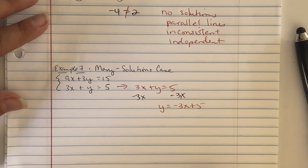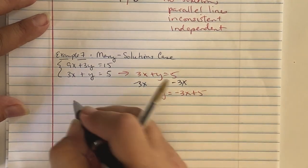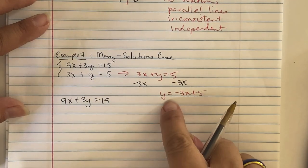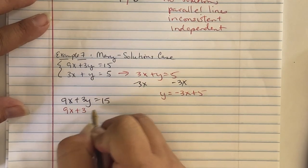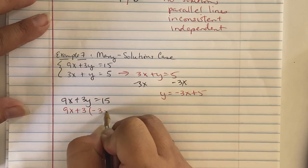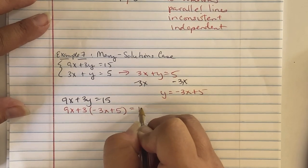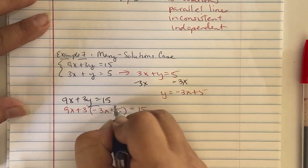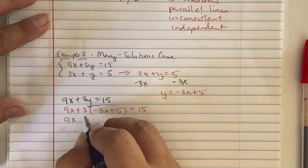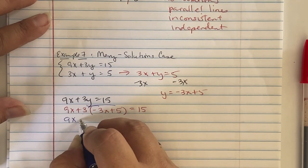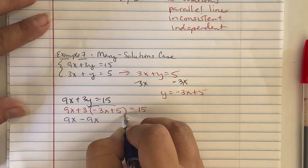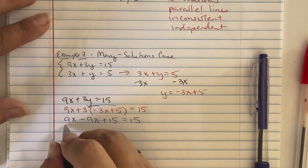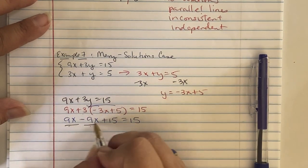We take the first equation, 9x plus 3y equals 15, and substitute in for y: 9x plus 3 times (negative 3x plus 5) equals 15. Distributing: 9x minus 9x plus 15 equals 15. We notice the x terms — 9x and negative 9x — cancel out.